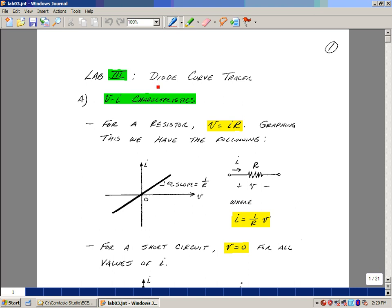We're going to do this on the oscilloscope. In the course, we've been looking at some basic elements like resistors, voltage sources, and current sources. We usually describe them mathematically.